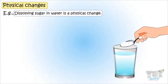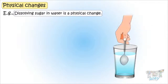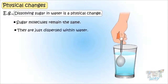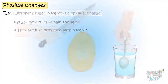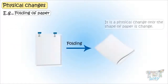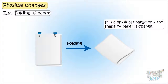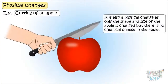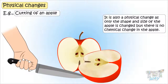Dissolving sugar in water is a physical change, as sugar molecules remain the same but are just dispersed within the water. Dicing potatoes is a physical change, as no new substance is formed while cutting potatoes. Folding of paper is a physical change — only the shape of paper is changed. Crushing of paper is a physical change. Cutting of an apple is also a physical change, as only the shape and size of the apple is changed, but there is no chemical change in the apple.